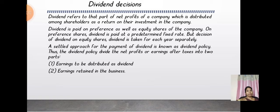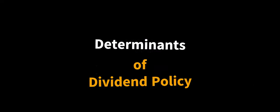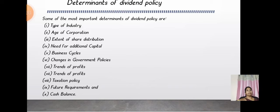Dividend refers to that part of a company's net profit which is distributed among shareholders as a return on their investment. Under dividend, there are two things: earnings to be distributed as dividend, and earnings retained in the business. The determinants of dividend policy include: type of industry, age of corporation, and extent of share distribution.